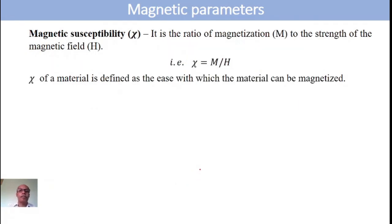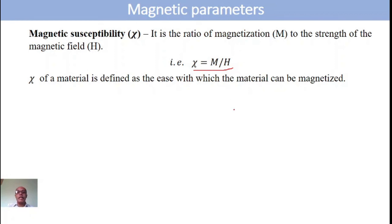Finally, the last magnetic parameter we are studying is magnetic susceptibility. It is defined as the ratio of magnetization to the strength of the magnetizing field. Otherwise, it is defined as the easiness with which a magnetic material can be magnetized.